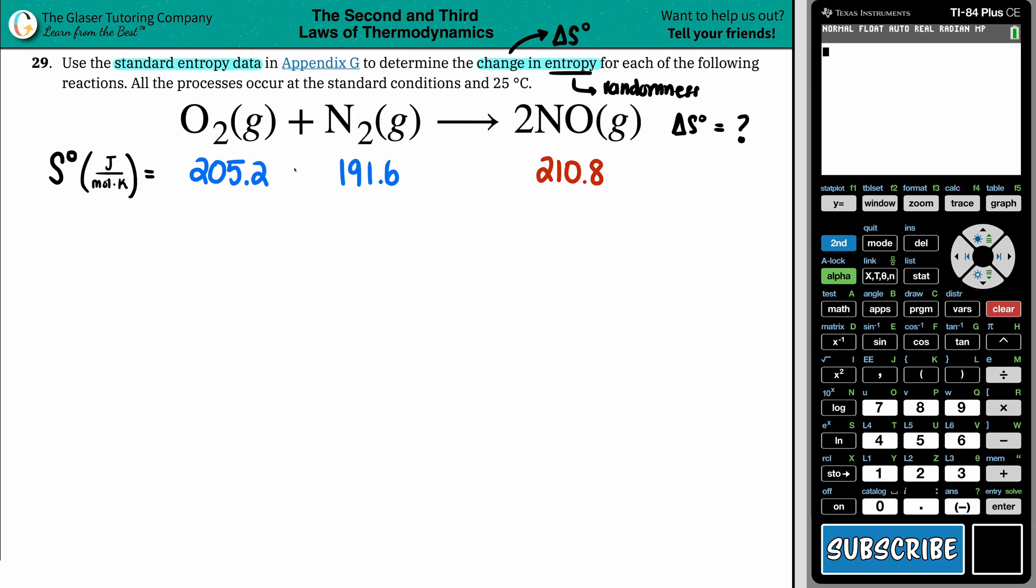That's why we have to do the math sometimes to see specifically what the actual value is going to be, whether we're becoming more random or less random. Let's figure it out. Now I did go in the back of the textbook for you to find those entropy values. So for O2 you have 205.2 joules per mole times Kelvin. For N2 you got 191.6 and for NO you got 210.8.